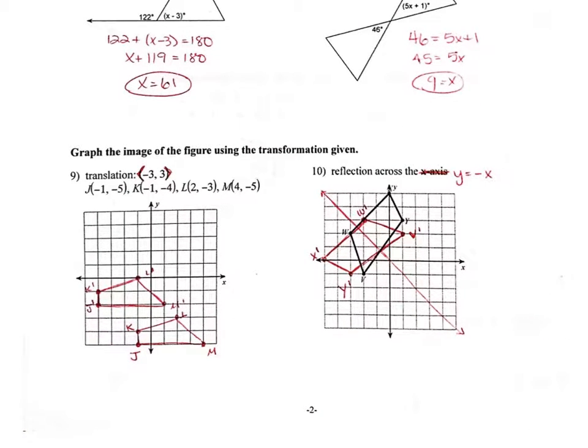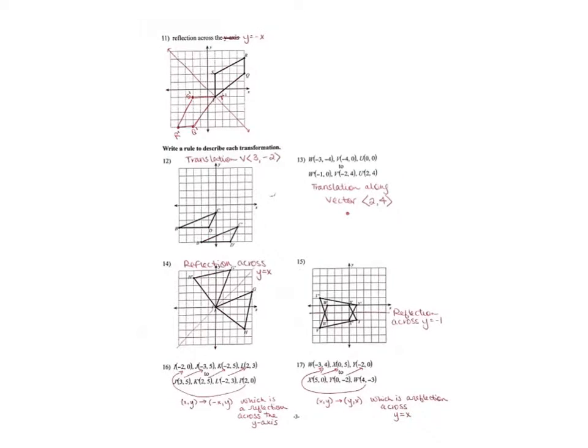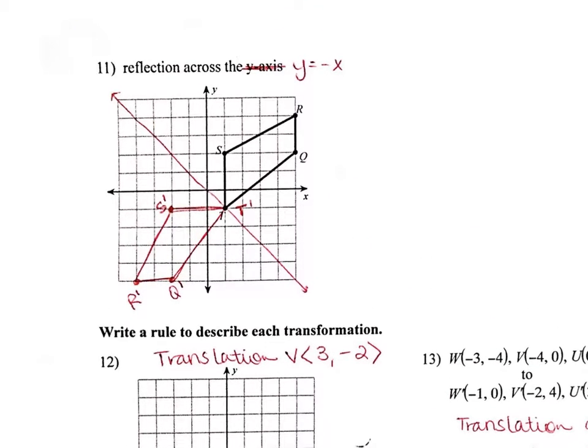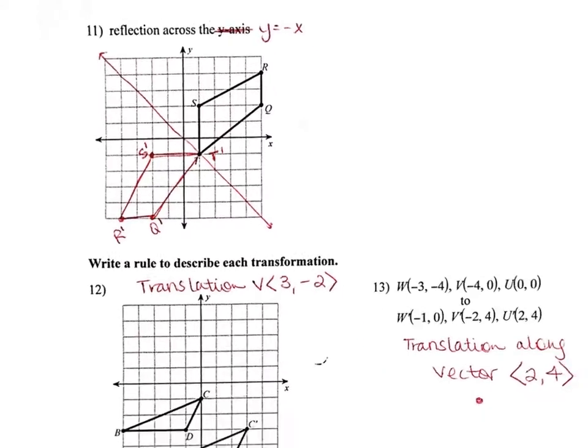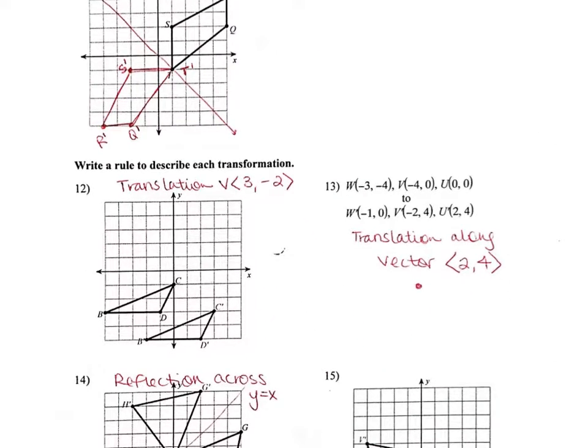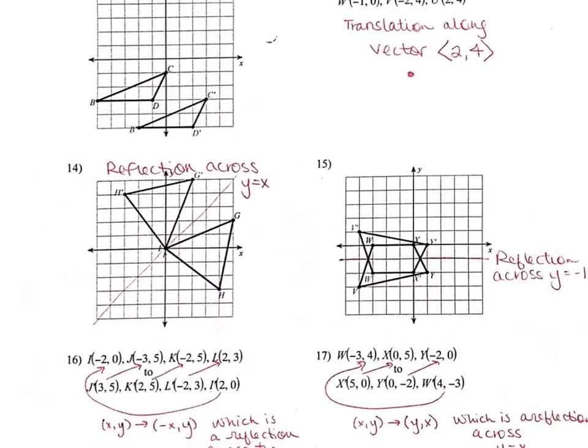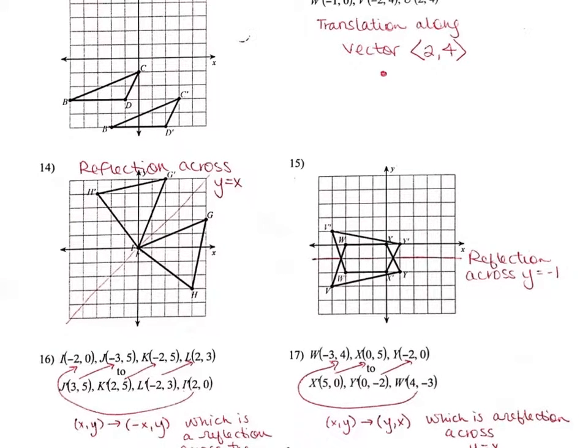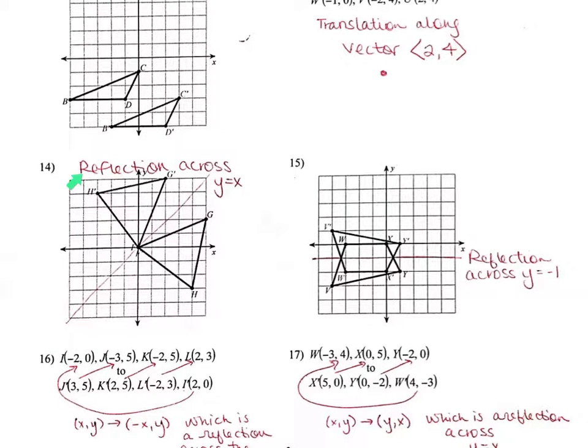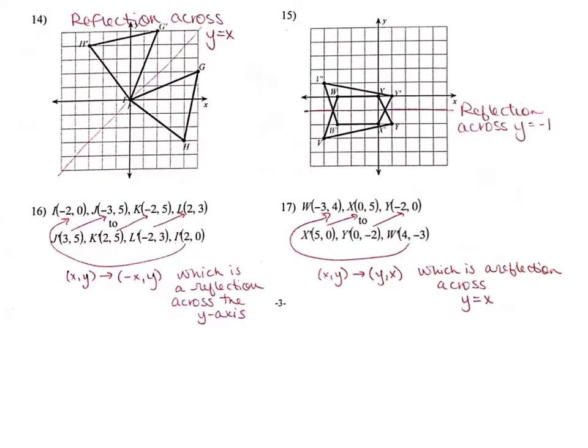Remember that we changed the directions on question ten. Eleven, again we changed the directions. Twelve and thirteen, fourteen and fifteen, so the answer to fourteen is written above the graph. Sixteen and seventeen.